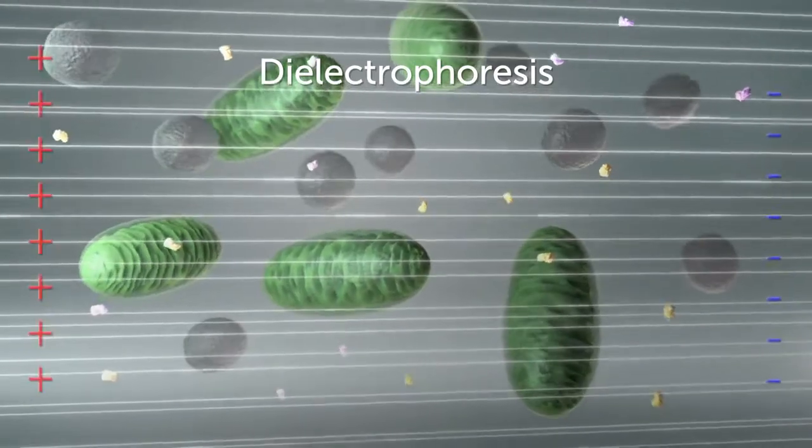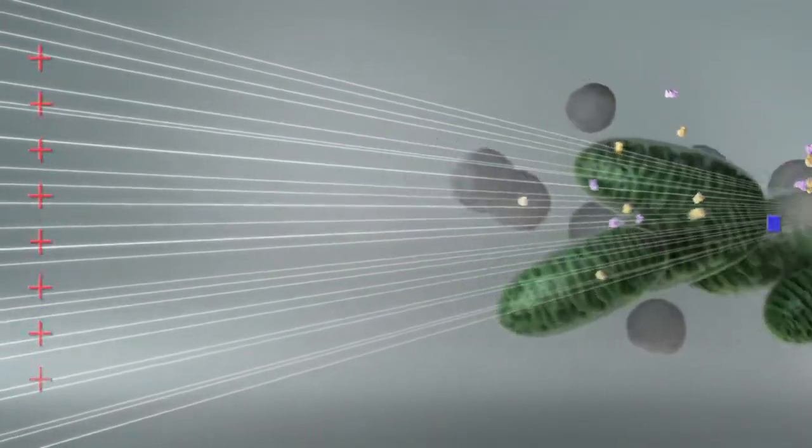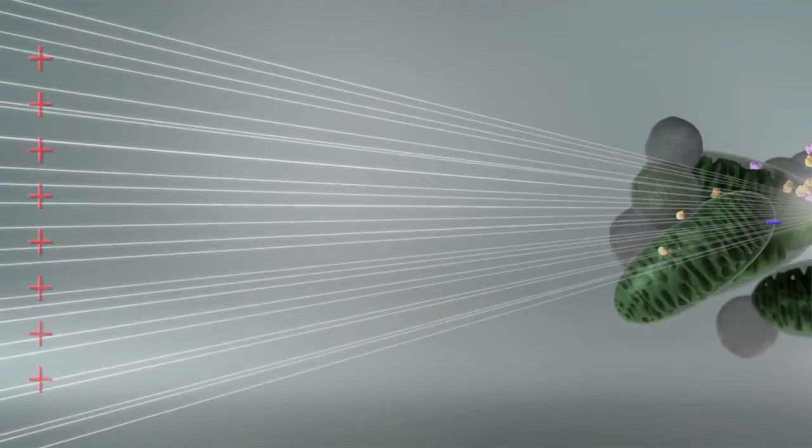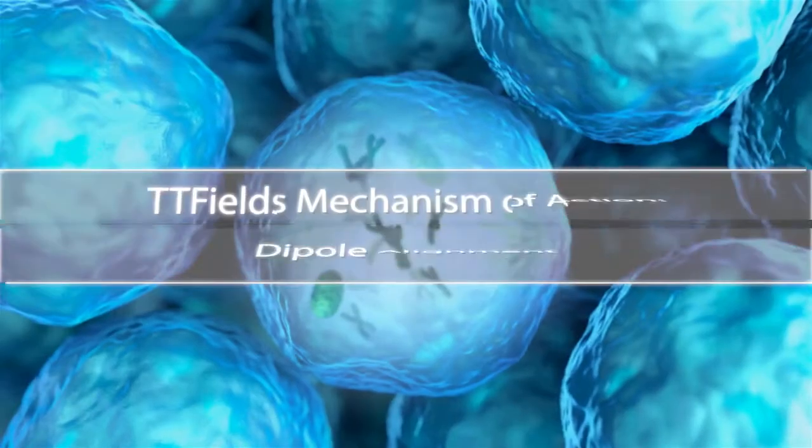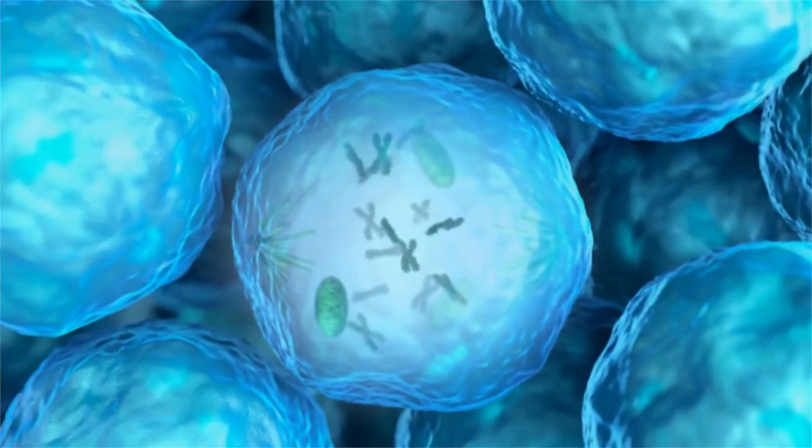Dielectrophoresis: When electric fields are non-uniform, polarizable objects migrate toward regions of high field density in a process known as dielectrophoresis. Let's now explore these physical processes in biological context.